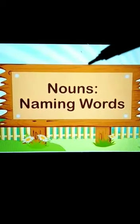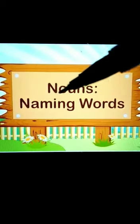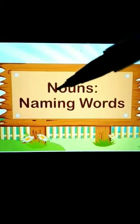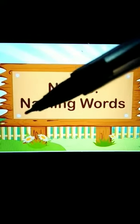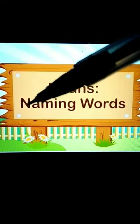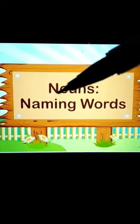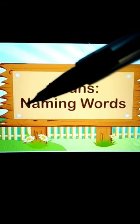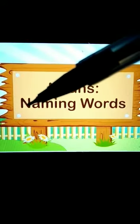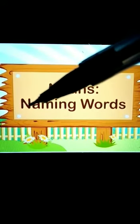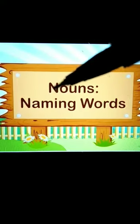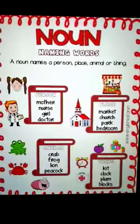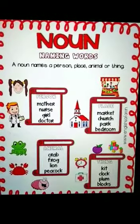Let's make it more easy for you to learn. Which alphabet is this? N. Again N. So N stands for nouns and N stands for naming words. Hence, the other name for naming words is nouns. Naming words are called nouns.